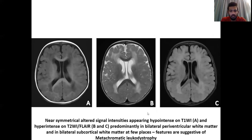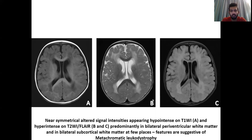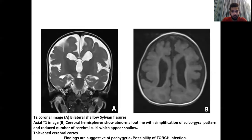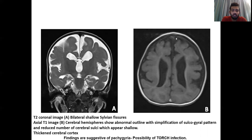Image A is a T1-weighted image showing near-symmetrical altered signal intensity that appears hypointense on T1-weighted image and hyperintense on T2-weighted image and FLAIR, seen predominantly and nearly symmetrically in bilateral periventricular white matter and bilateral subcortical white matter. This is suggestive of metachromatic leukodystrophy. Another case shows a pattern of pachygyria: on the T2 coronal image, bilateral shallow sylvian fissures are seen, and on the T1-weighted axial image, the cerebral hemispheres show an abnormal outline with simplification of the sulcogyral pattern, reduced number of cerebral sulci, and thickened cerebral cortex, suggestive of pachygyria with possibility of TORCH infection.